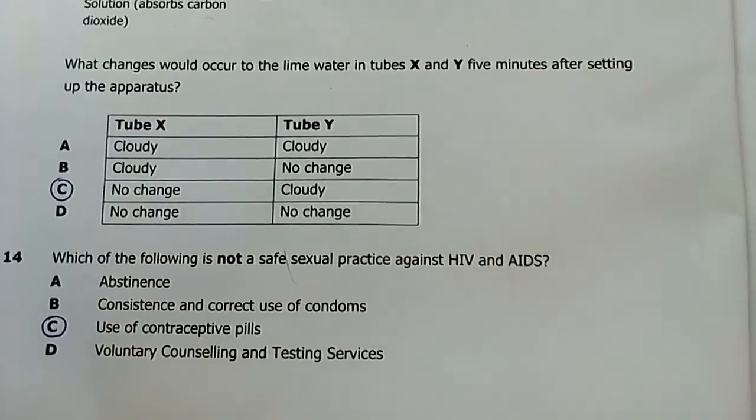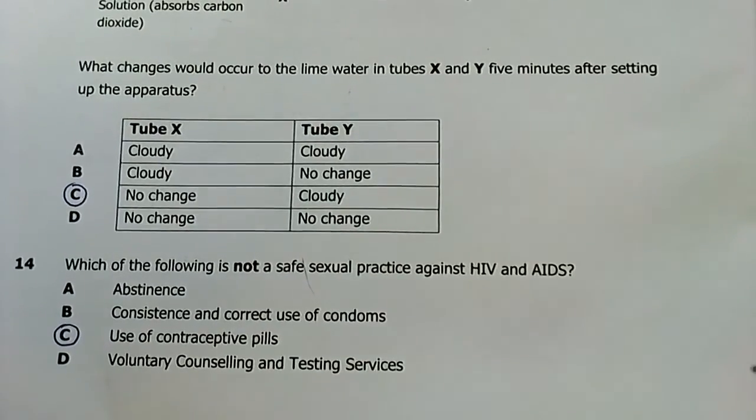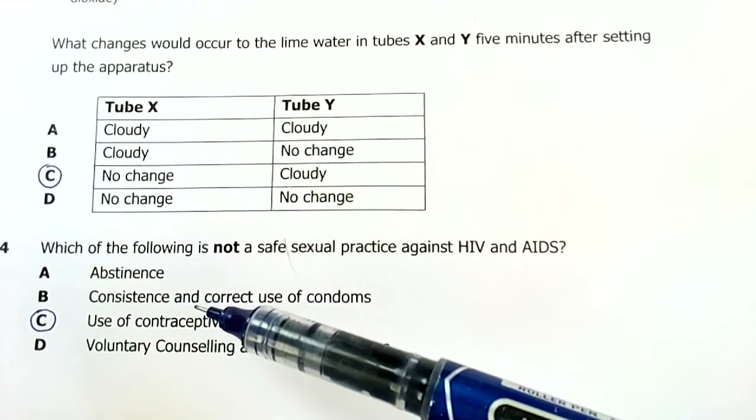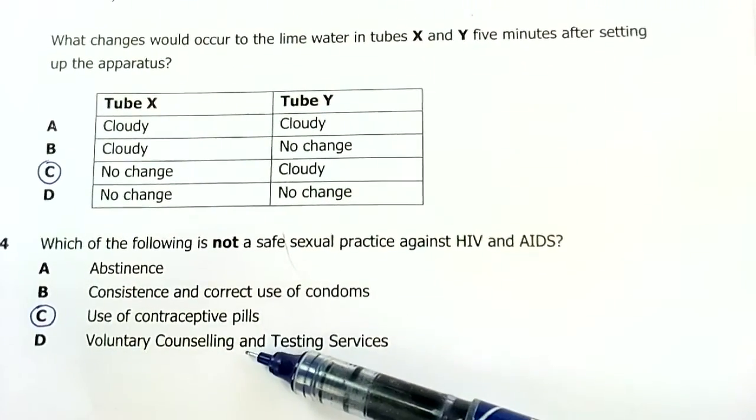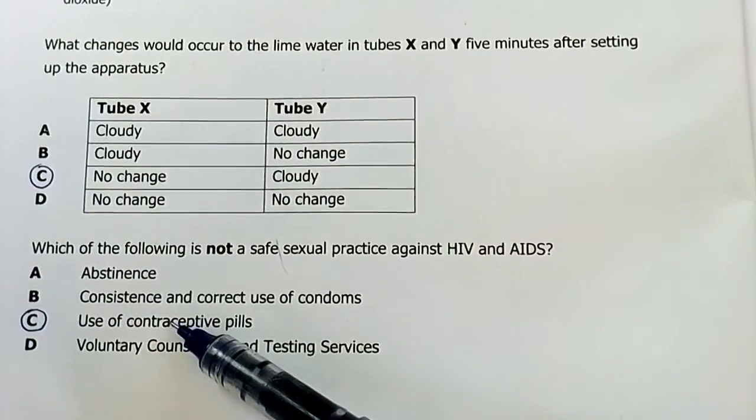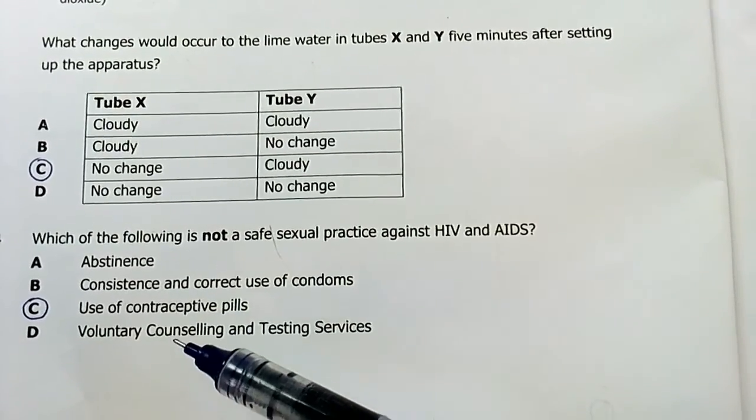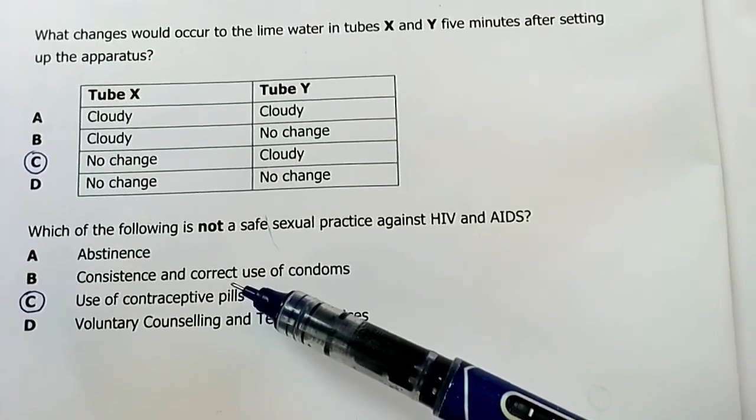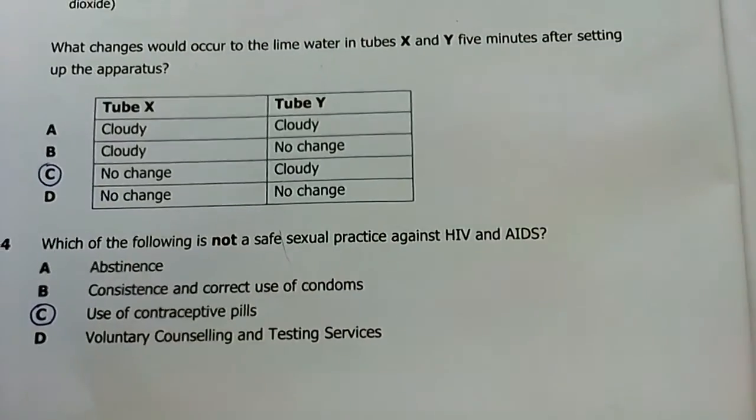Number fourteen: which of the following is not a safe sexual practice against HIV and AIDS? Abstinence is safe, consistent and correct use of condoms is safe to a greater extent, voluntary counseling and testing is safe because you would know things about HIV. But use of contraceptive pills is for family planning, prevention of pregnancy, or control over the number of children. This one has nothing to do with prevention of HIV. C is our answer for number fourteen.